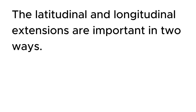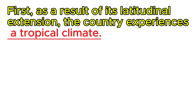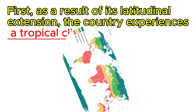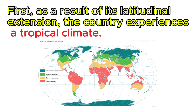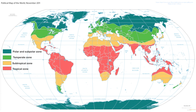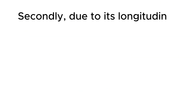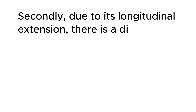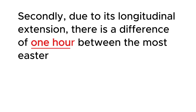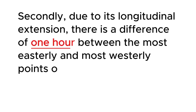Latitudinal and longitudinal extension are important in two ways. First, as a result of latitudinal extension, the country experiences a tropical climate — that is, all parts of the country experience overhead sun twice a year. Secondly, due to its longitudinal extension, there is a difference of one hour between the most easterly and the most westerly points of the country.